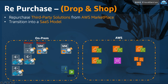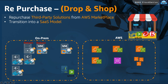On-premises, you might be running some third-party solutions that you wish to keep using after migrating to AWS. There is no need to migrate them, as you can easily repurchase them through AWS Marketplace as software as a service. This strategy is known as repurchase, or drop-and-shop. We will discuss the AWS Marketplace in more detail in the next section of the training.